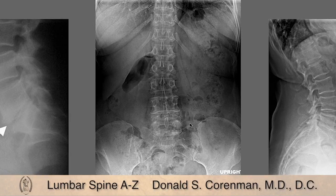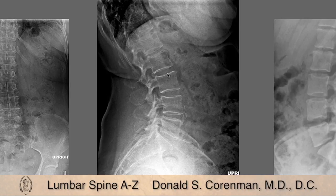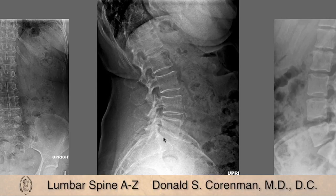When you start to get disc narrowing on the AP, it's not easy to see, but you can start to look for alignment changes. For example, at L2-3 there is a slight angular change indicating some degeneration on the left side. And at 5-1, which is always difficult to see on an AP, there's still some sclerosis and narrowing — so you might judge there is some degenerative change at 5-1. On the lateral, the disc heights should cascade larger as you go down. These get larger, larger, larger, and then somewhat narrowed, so you can make an assumption there are some mild degenerative changes.